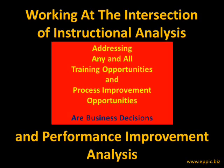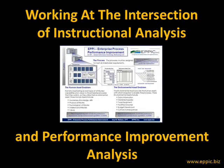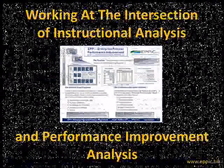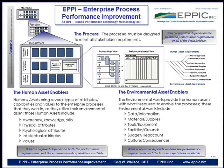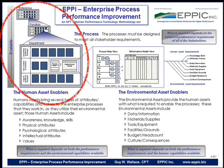At the intersection of instructional analysis and performance improvement analysis are the business processes — the enterprise processes themselves. In my big picture of Enterprise Process Performance Improvement, EPI, I look at three major sets of variables to impact the process. EPI is scalable — whether I'm looking at a team, a single process, a department, or business units all the way up to the entire enterprise, this model is scalable.